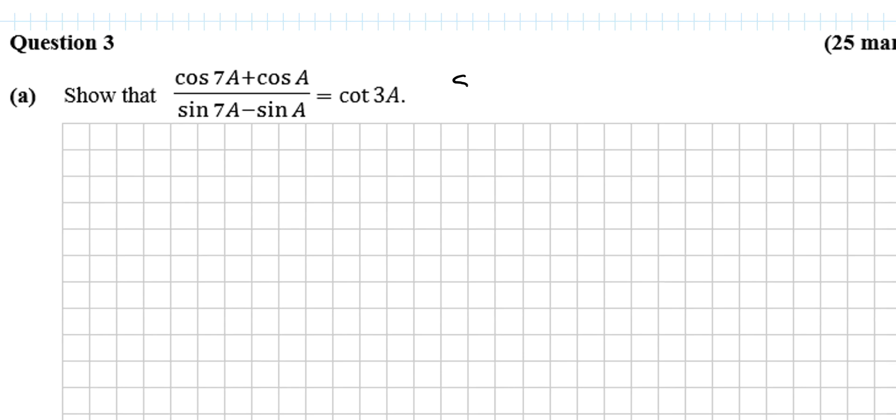Okay, so in this question we're looking at the SEC 2016 Leaving Cert Higher Level, Paper 2, Question 3. So it says, show that cos 7a plus cos a over sine 7a minus sine a is equal to cot 3a.